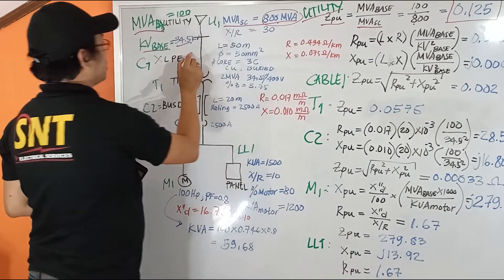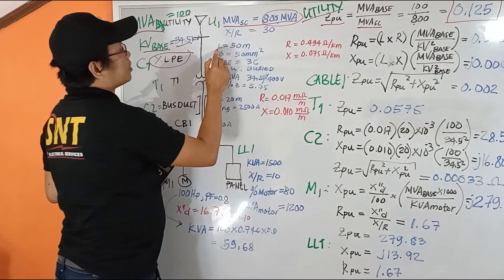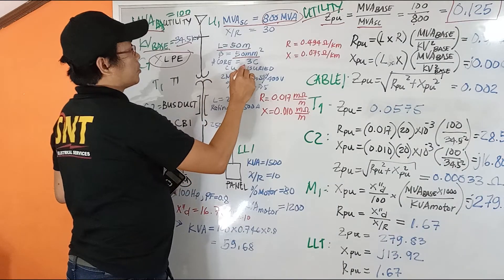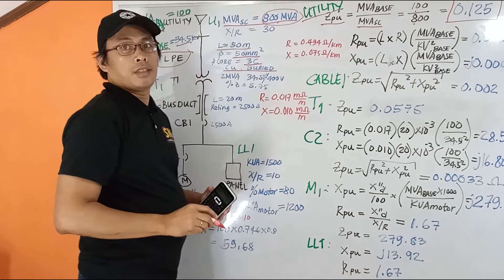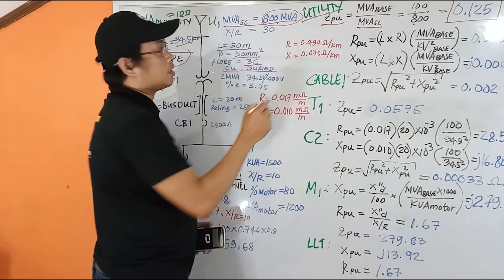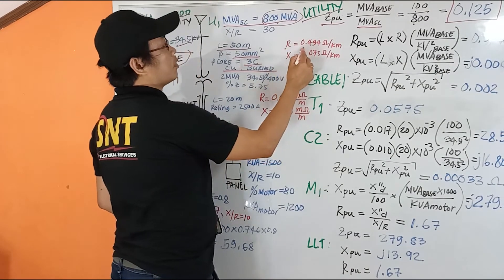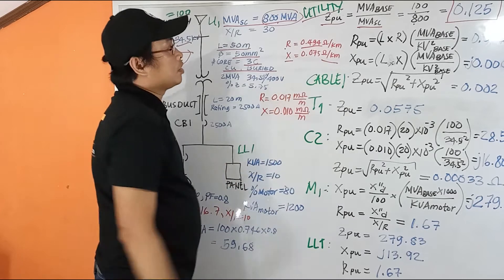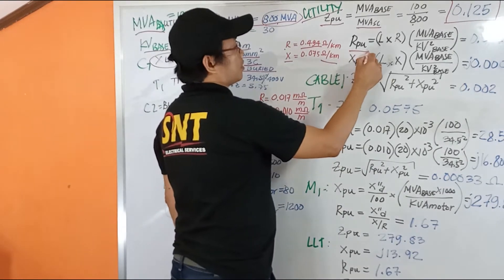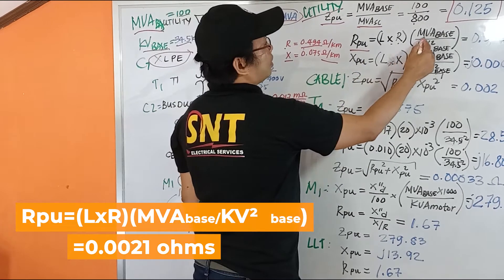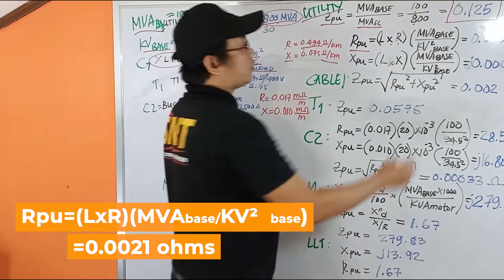Now for our cable here, the XLPE, we are given the distance of 50 meters, the diameter is 50 mm squared, and we have three core copper and buried. So after getting this, we came out with the data of the resistance at 0.494 ohm per kilometer and reactance of 0.075 ohm per kilometer. So we get the resistance per unit: length times the resistance given times the MVA base over the kV base squared. And we get this value.